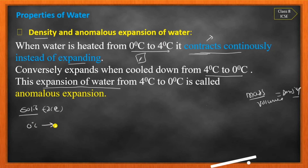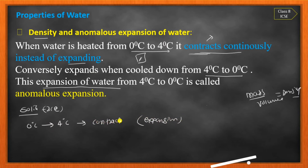If we increase temperature from zero to four degrees Celsius, as per natural behavior it should expand, but water contracts. Conversely, if we have water at four degrees Celsius and we decrease temperature to zero degrees Celsius, as per natural behavior it should contract, but water expands. This opposite behavior is the anomalous expansion of water.